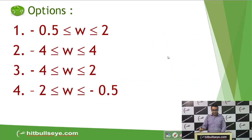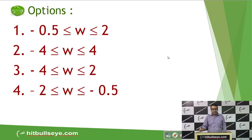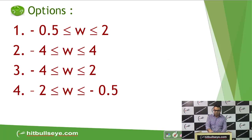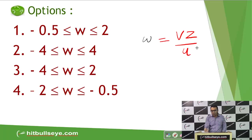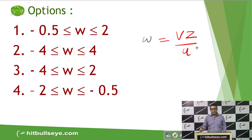We have to find the range for W — that means the minimum possible value of W and the maximum possible value for W. W is equal to VZ upon U. For this question, I'm going to discuss two different approaches; the first one will be a bit lengthier compared to the second.